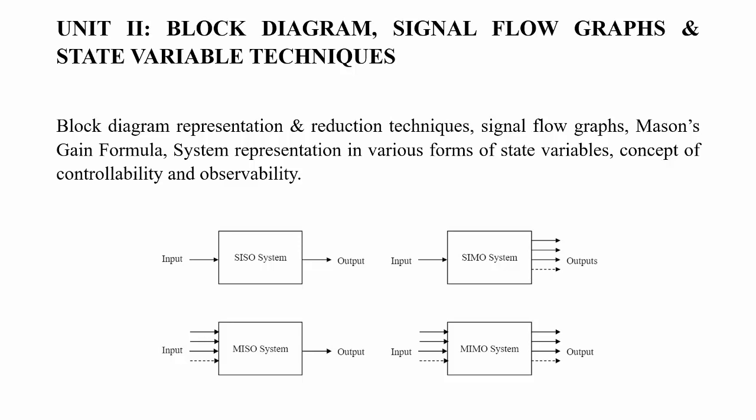Block Diagram and Signal Flow Graph are also a form of system representation. In block diagrams, you represent the system mathematically in the form of blocks. In Signal Flow Graph, you represent the gains of the blocks in the form of signals flowing through arrows, called SFGs. Another type is the state variable technique, which is an important representation widely used in system representation.